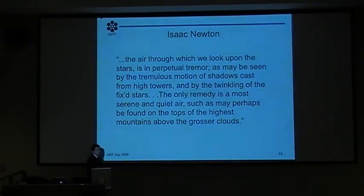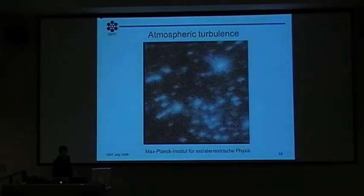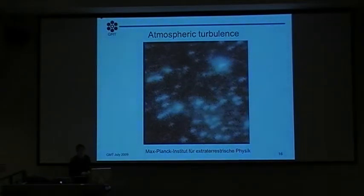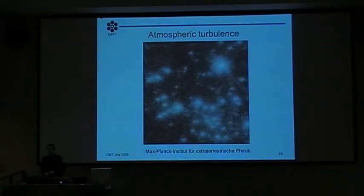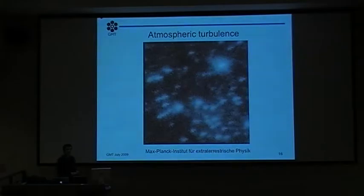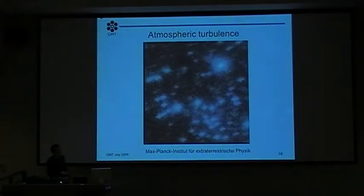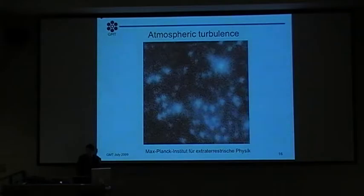Isaac Newton suggests placing telescopes above some of the turbulence in the atmosphere by plonking them on the highest mountains. And indeed, many of the large telescopes in the world are placed on very high mountains. For example, the Gemini Telescope and the two Keck Telescopes are on Mauna Kea, a four-kilometre-high shield volcano in the Hawaiian Islands.